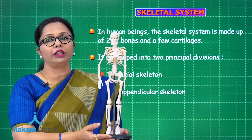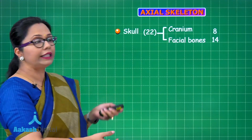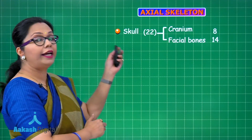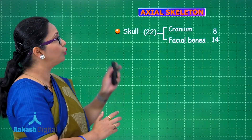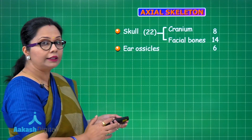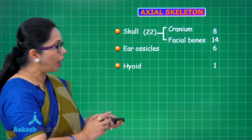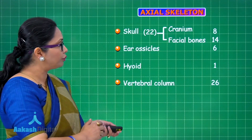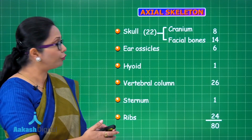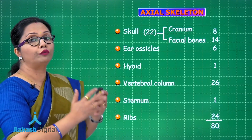The axial skeleton comprises 80 bones in all. The skull is made up of 22 bones: cranium (the brain box) has 8 bones, and facial bones are 14 in number. Ear ossicles are 3 in each middle ear, totalling 6. The hyoid — our tongue bone — is 1. The vertebral column has 26 bones, the sternum 1, and the ribs are 12 pairs, making 24. All these add up to 80 bones.